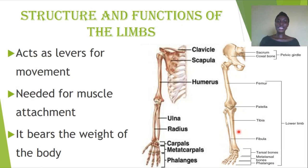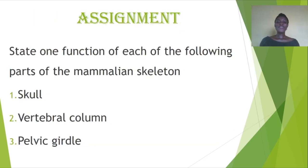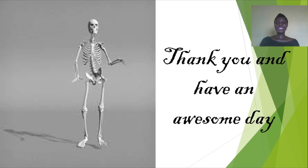Today we looked at the various parts of the mammalian skeleton — specifically the appendicular skeleton — and described the functions of its various parts. In our previous lesson we looked at the axial skeleton. For your assignment, state one function of each of the following parts of the mammalian skeleton: the skull, the vertebral column, and the pelvic girdle. Good luck and see you in the next class!